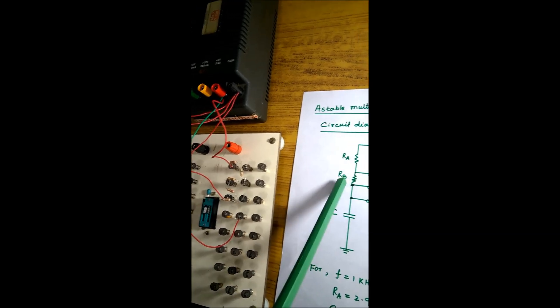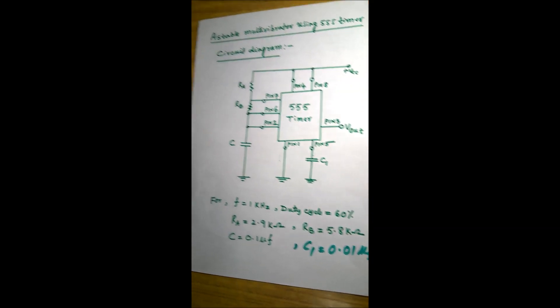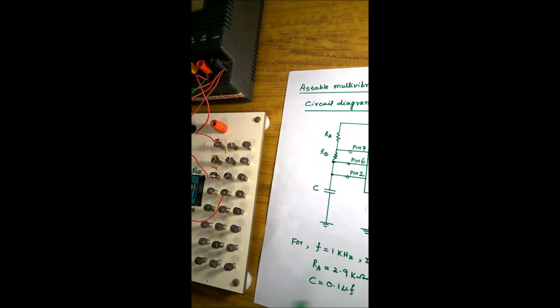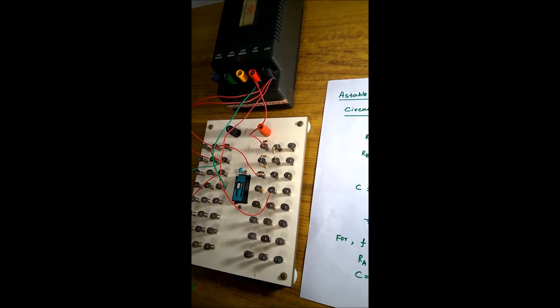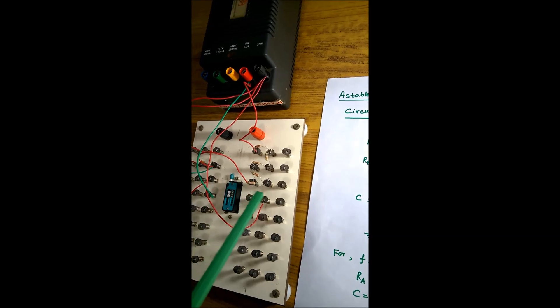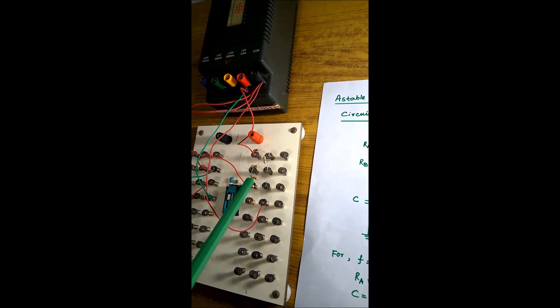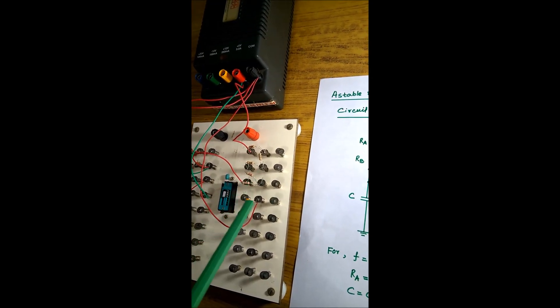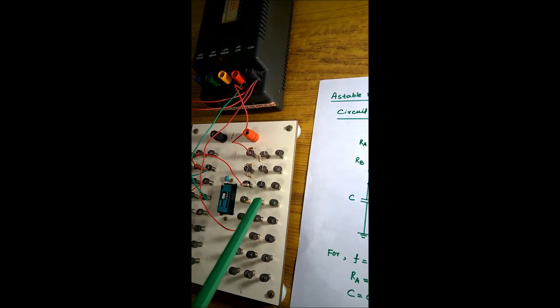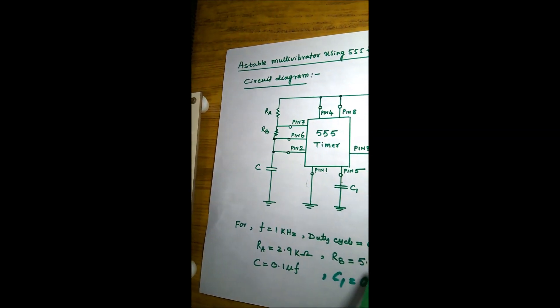Now for RB, which according to the design is 5.8 kilo — exactly 5.8 kilo is also not available. So we used a 5.6 kilo resistor and a 220 ohm resistor connected in series, which together give approximately 5.8 kilo.